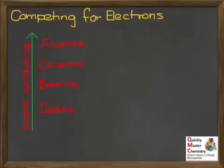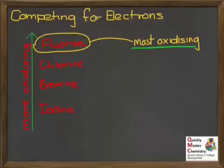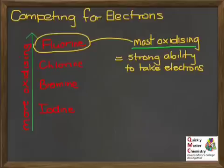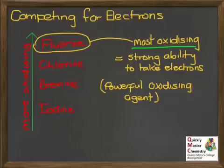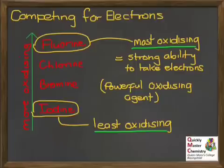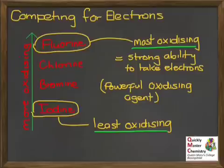Within group 7, there is a trend in oxidising ability. At the top of the group, fluorine is the most oxidising of the halogen elements — it has the strongest ability to take electrons away from other things, making it a very powerful oxidising agent. Going down to the bottom of the group, iodine is the least oxidising, making it only a weak oxidising agent. The trend within group 7 is that elements become more oxidising as you go up the group, with fluorine being the most oxidising.